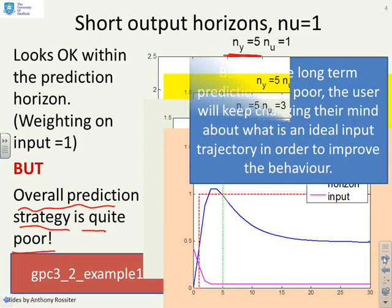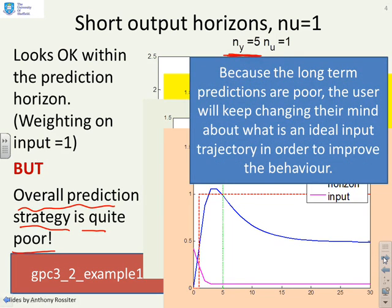So where's our summary? Because, and this is key, the long term predictions are poor, so that's the predictions beyond the horizon, the user is going to end up changing their mind every time they do an optimization. Because they say, oh, those predictions aren't going where I want, I need to change something in order to improve them. And if you keep changing your mind, then the optimization you're solving clearly does not make sense.